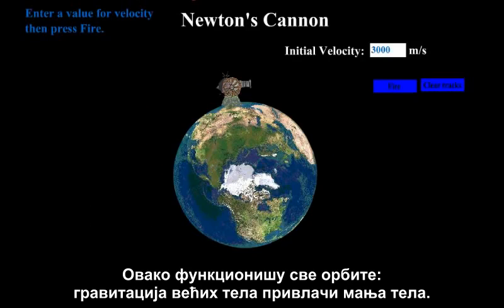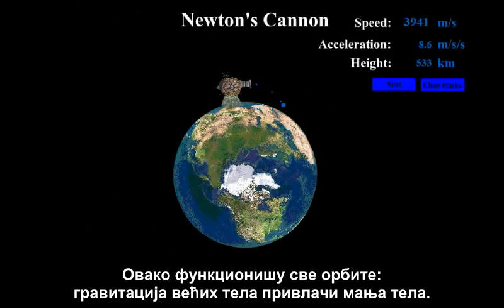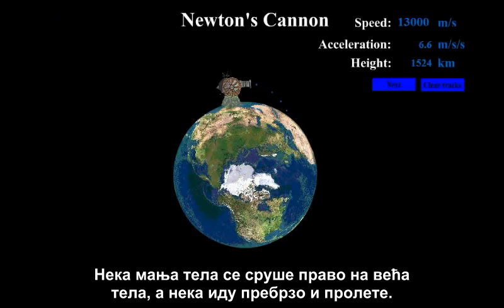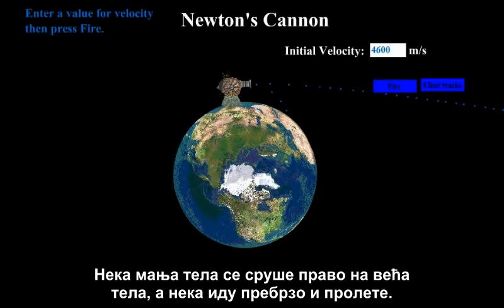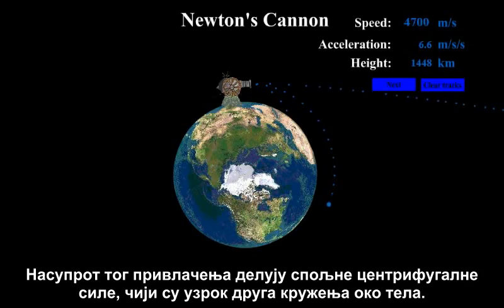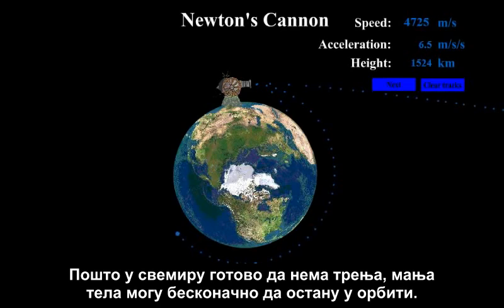This is how all orbits work. Smaller objects near bigger objects are pulled in by gravity. Some will crash right into the bigger object, and some will be going too fast and fly on by. But if they are going the right speed, they will be pulled into an elliptical path around the object. That pull is counteracted by the centrifugal force outward caused by the revolutions around the object. And because there is virtually no friction in space, objects can remain in orbit indefinitely.